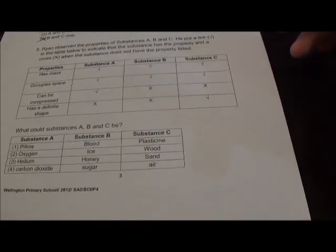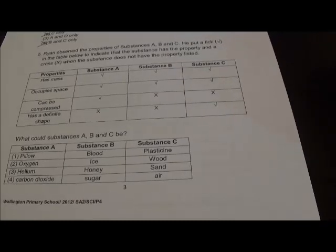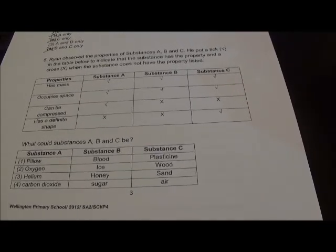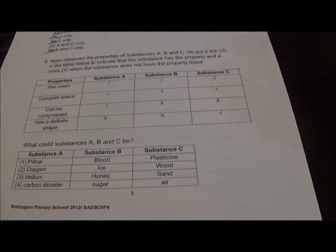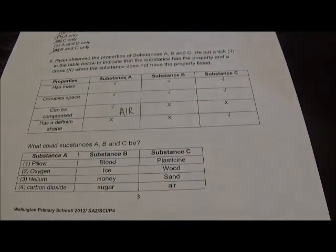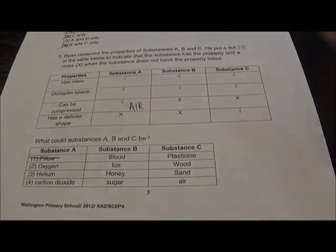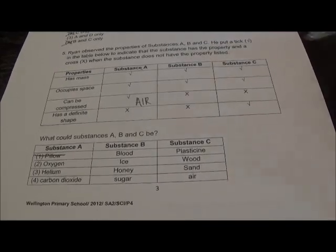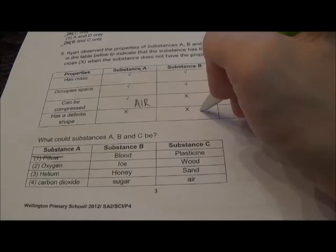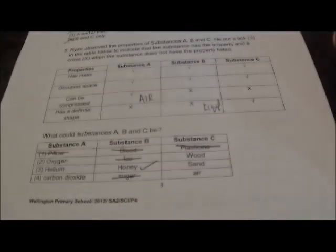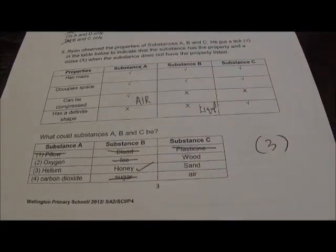Question 5: Ryan observed the properties of substances A, B, and C. It has mass and can be compressed — there's only one thing that can be compressed, and that must be air for substance A. For B: it has mass, occupies space, and does not have a definite shape, so this must be a liquid. Ice is a solid, sugar is a solid, so you're left with honey, which is a liquid. Question 5, answer is 3.